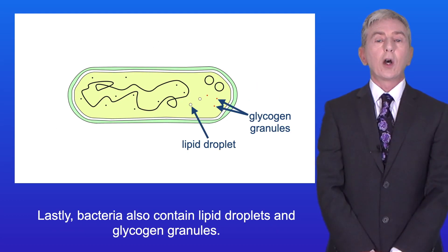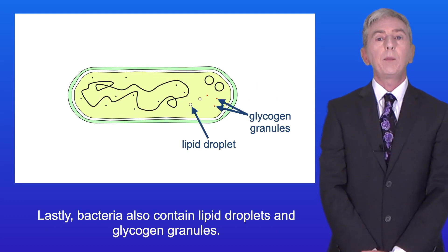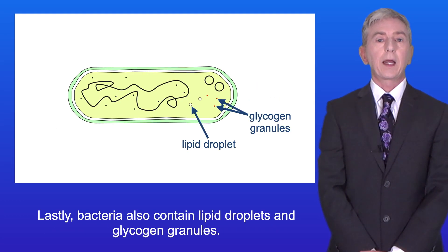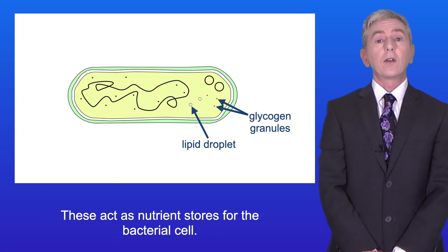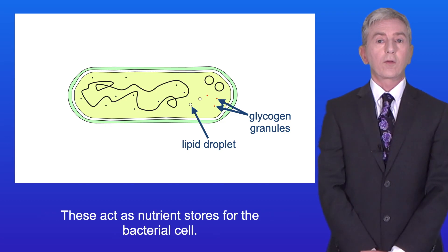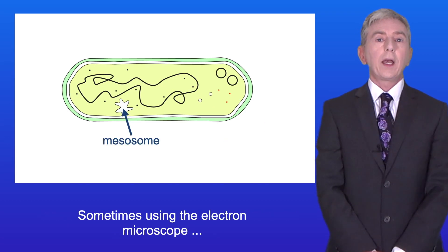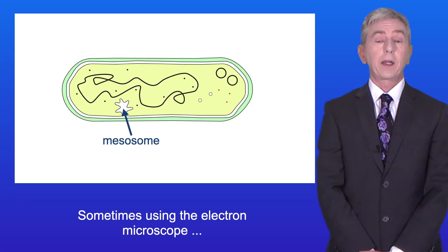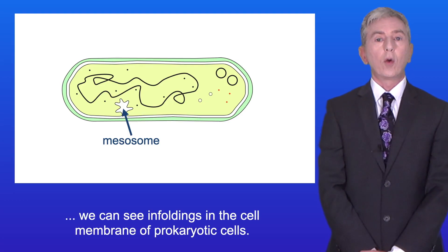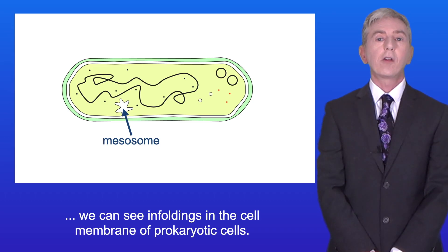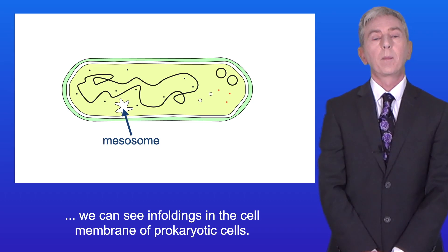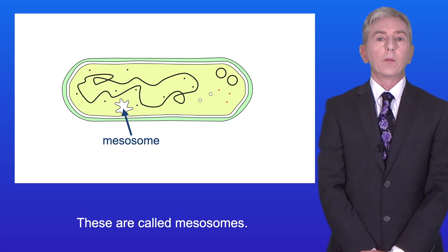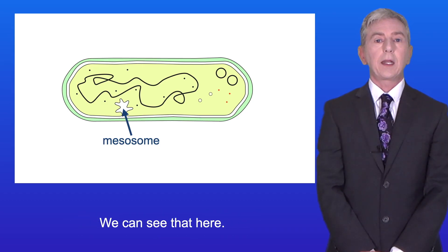Lastly, bacteria also contain lipid droplets and glycogen granules, and these act as nutrient stores for the bacterial cell. Sometimes using the electron microscope we can see infoldings in the cell membrane of prokaryotic cells. These are called mesosomes, and we can see that here.